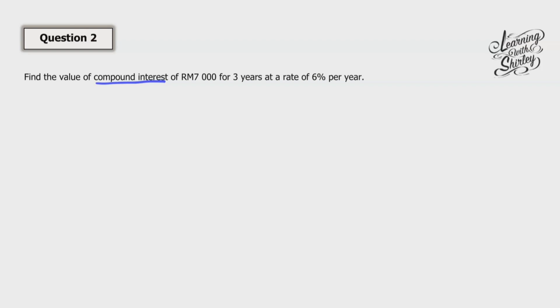For this, we're going to use the same formula, which is MV equals to P bracket 1 plus r over n to the power of nt. From the information given, we know that P is 7,000. And then this is years, so t is 3. And rate is r 0.06. And this is n, which is 1 because it's per year.